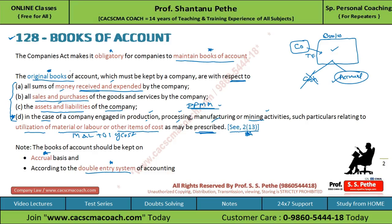Normally in the exam, the question asked is whether a company is required to maintain books of account. You have to write: yes, as per Section 128, every company will have to maintain books of account. Then under Section 2(13), you quote what books of account means — original books of accounts kept with respect to money received and expended, sales and purchases, assets and liabilities, and in case the company is engaged in production, processing, manufacturing or mining, then particulars related to utilization of material, labour or other items of cost as may be prescribed. Also write that these books of account should be maintained on accrual basis, not on cash basis, and as per the double entry system of accounting.